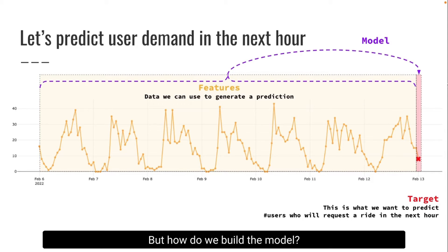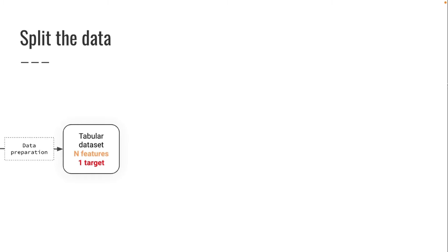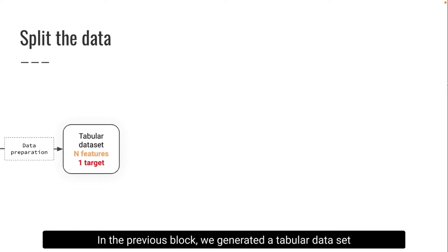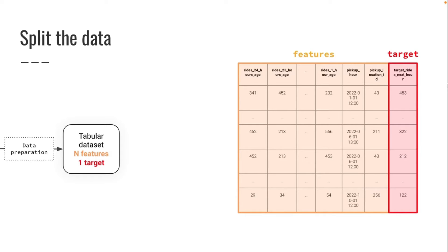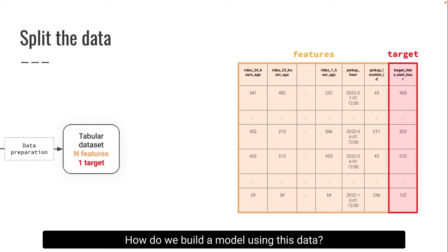But how do we build the model? In the previous block, we generated a tabular dataset that contains n columns for the n features, which you can see here, plus one more column with the target, which is what we want to predict. How do we build a model using this data?